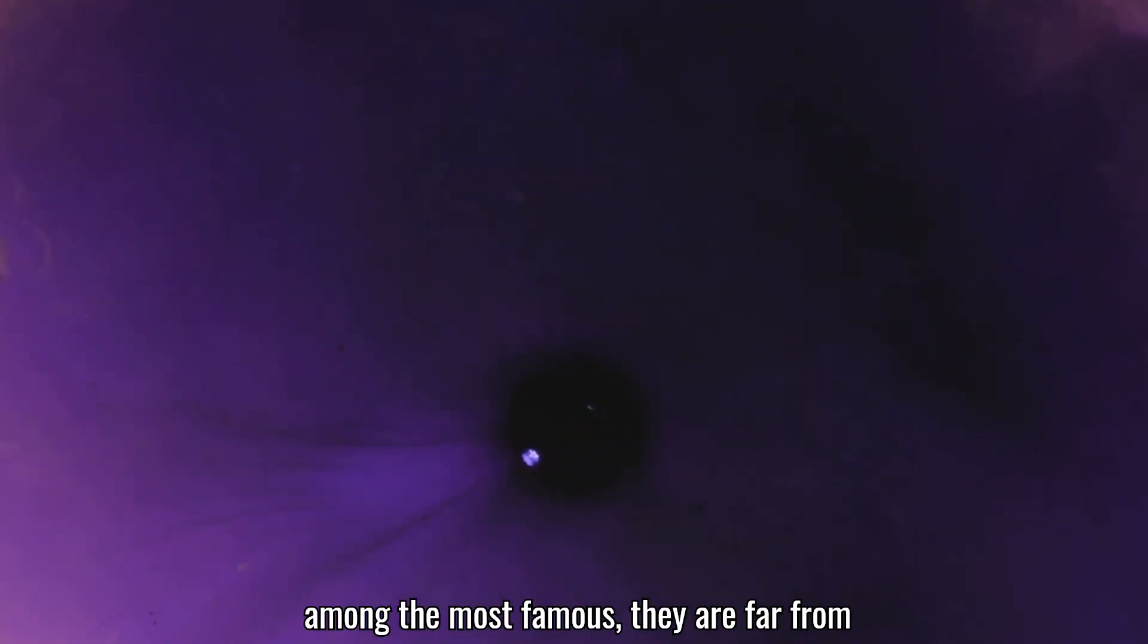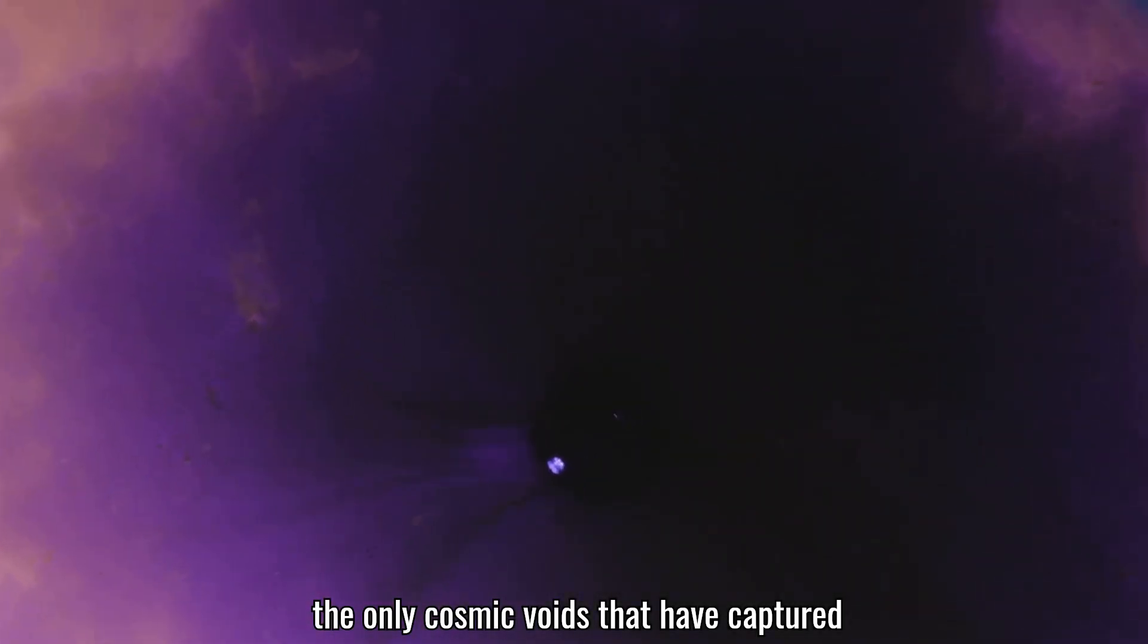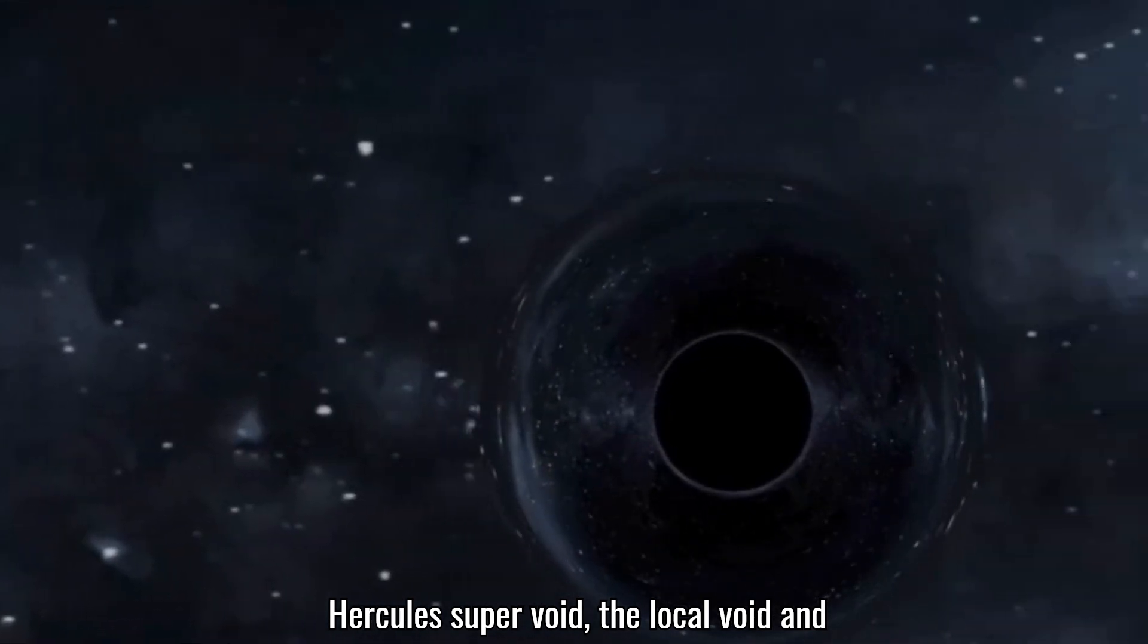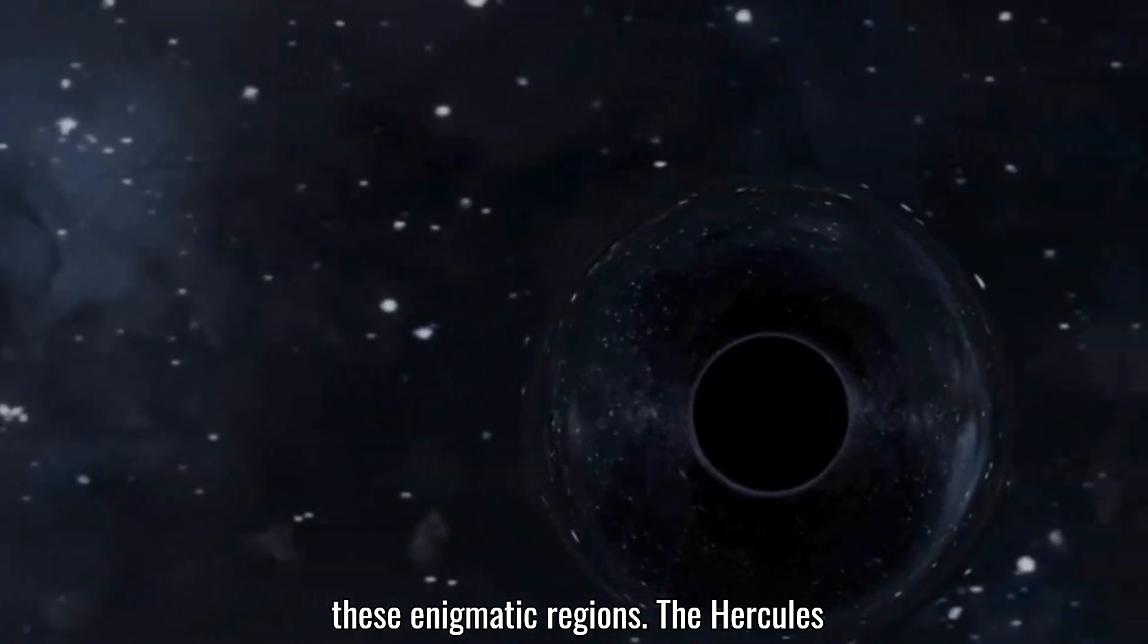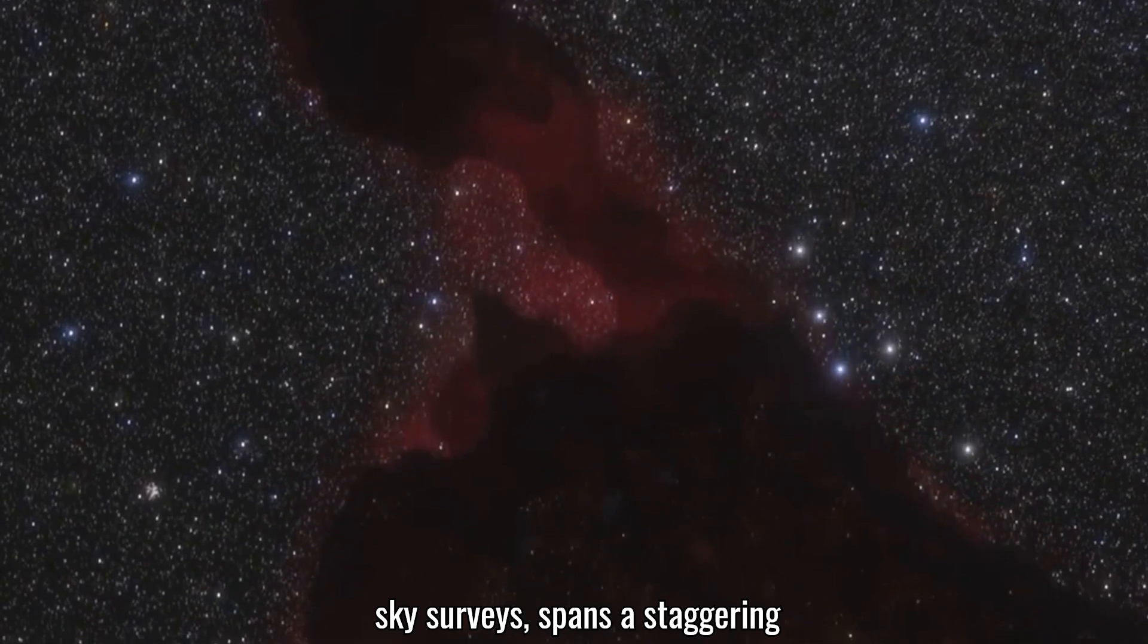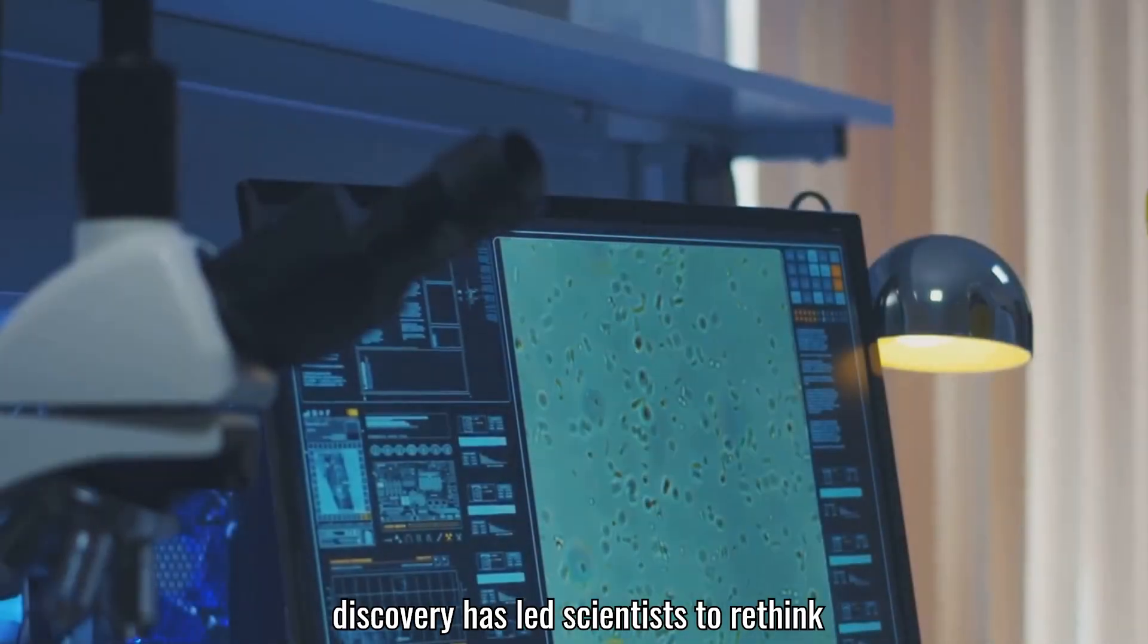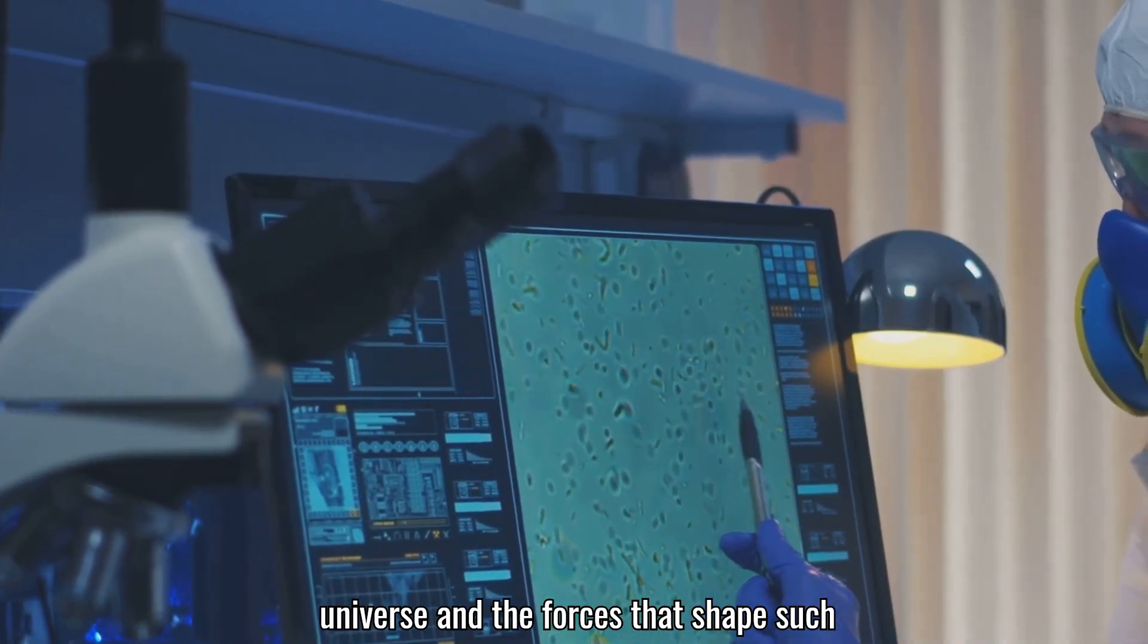While the Boötes Void and the Eridanus Supervoid are among the most famous, they are far from the only cosmic voids that have captured the fascination of astronomers. The Hercules Supervoid, the Local Void, and the Cold Spot are just a few more examples of these enigmatic regions. The Hercules Supervoid, discovered through extensive sky surveys, spans a staggering 330 million light-years. Its discovery has led scientists to rethink the distribution of matter in the universe and the forces that shape such colossal structures.